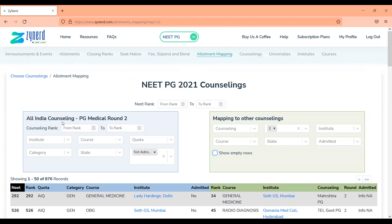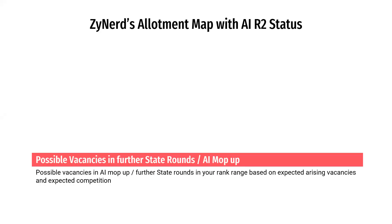You can also select your state counseling Round 1 to see state Round 2 possibilities. This will help you derive all possibilities as allotments happen and assess the impact. Expected competition can also be derived from the same list — you'll see who doesn't have a seat and will compete with you in further rounds. Beyond this, there may be additional competition from newly registered candidates or candidates who change their choices at any point in further rounds.